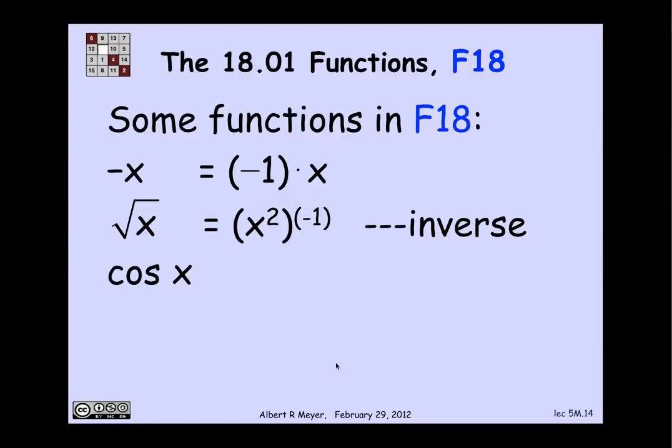Well, I gave you sine x, but not cosine x or any other trig functions. Why not? Well, I mean, I want them all. But I can get them by the rules already. So how do you get cosine x? Well, cosine x is just sine of x plus pi. Well, why is that in there? Pi is a constant. X is the identity. So the sum is a function that's an F18. And then if I compose that function with sine, I get sine of x plus pi, which is cosine x. So cosine x is there.